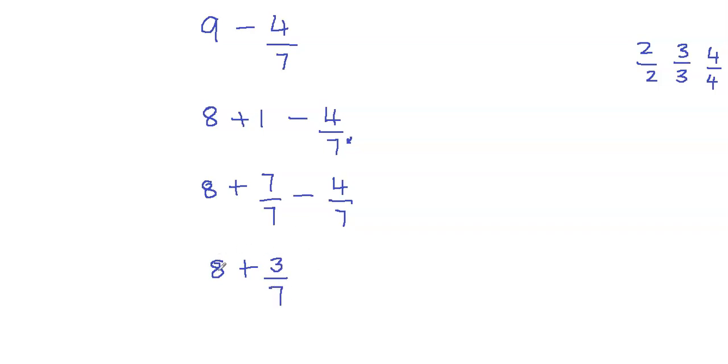And I can write 8 plus 3 sevenths as 8 and 3 sevenths. So that's how you subtract a fraction from a whole number using regrouping strategy.